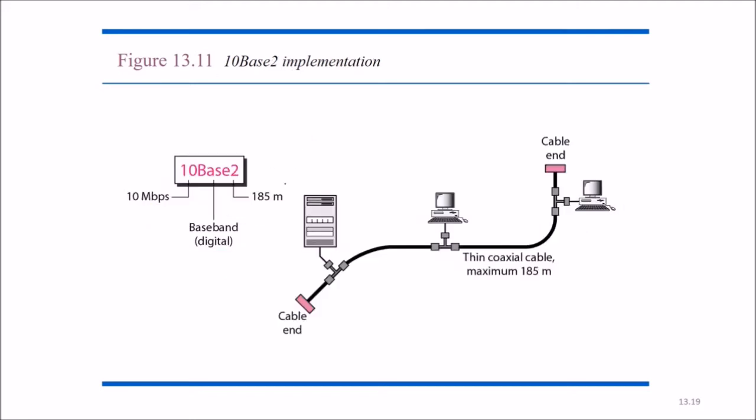This is the 10Base2 implementation. 10 means 10 Mbps, baseband means digital or baseband signal, and 2 is around 185 meters. So the cable ends, these are cable ends. These are thin coaxial cable maximum of 185 meters.